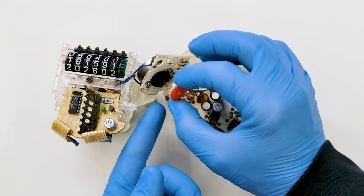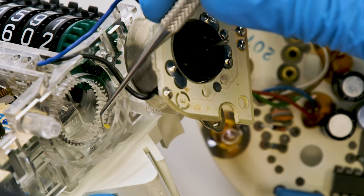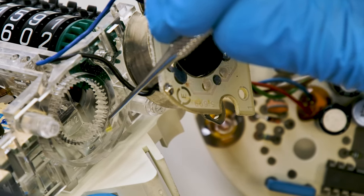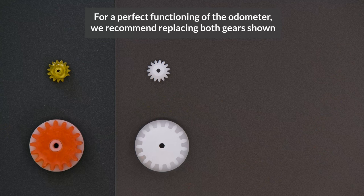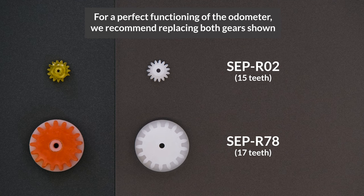Remove the faulty gears. With a curved tip probe, remove any plastic residue from the motor housing. Replace the two gears with the Minitool's replacements, SEP-R02 and SEP-R78.